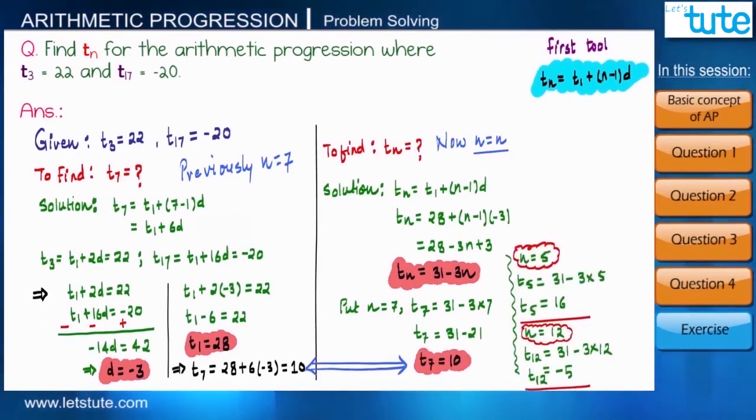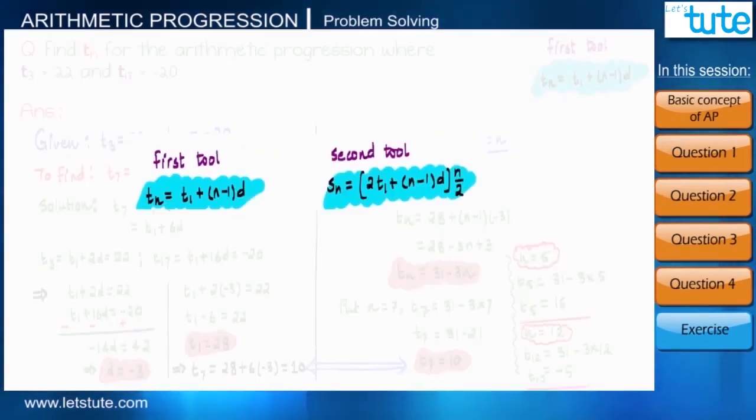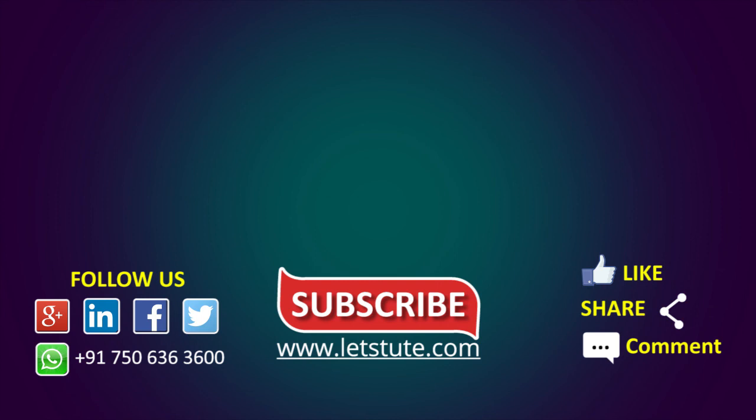So friends, by now you can easily identify the different parameters of any kind of arithmetic progression and you can solve any question asked on that. Next time we will try to solve some questions based on the second formula. If you like the video, please hit the like button, do share it with your friends and post your comments. You can watch the entire syllabus of CBSE math on our YouTube channel. Do subscribe to our channel and press the bell icon to never miss an update. Thank you for watching.